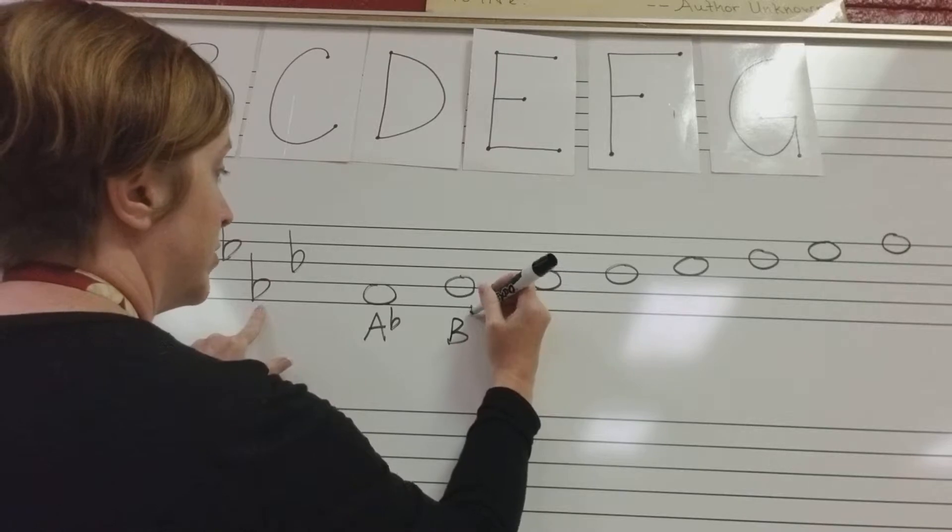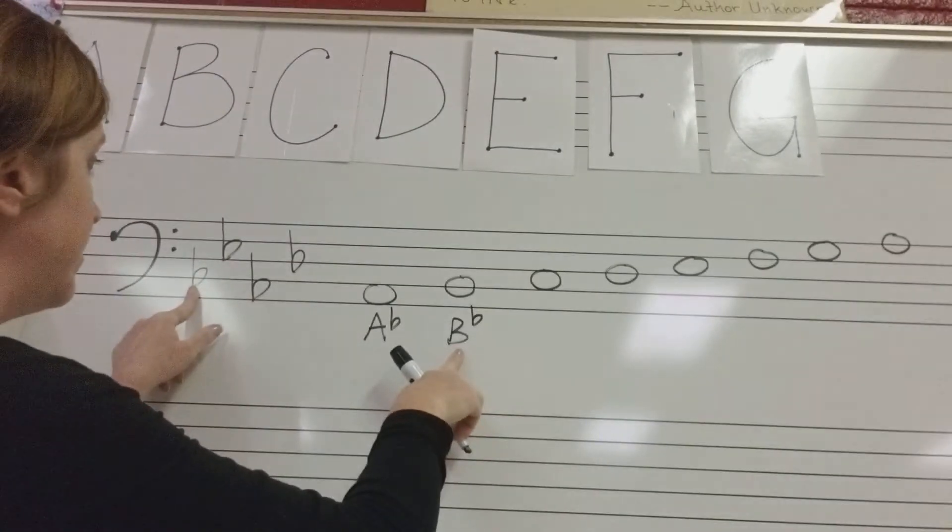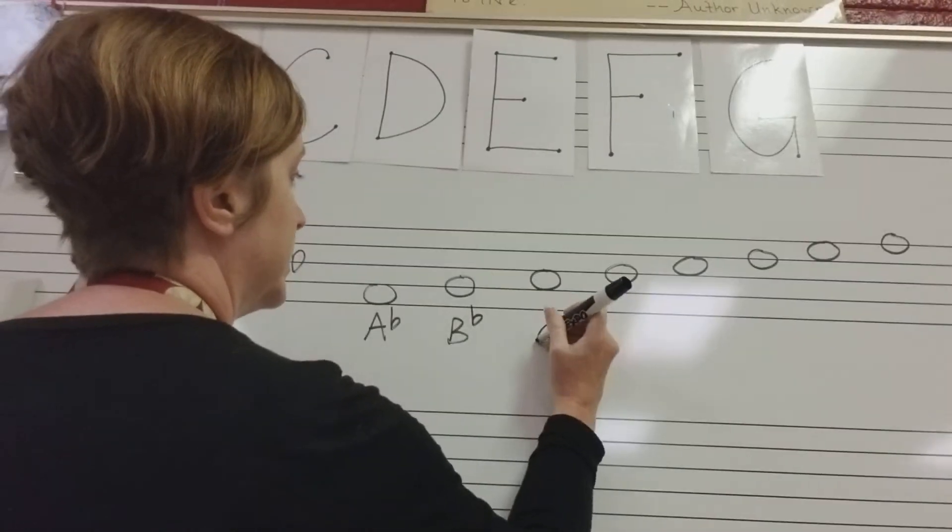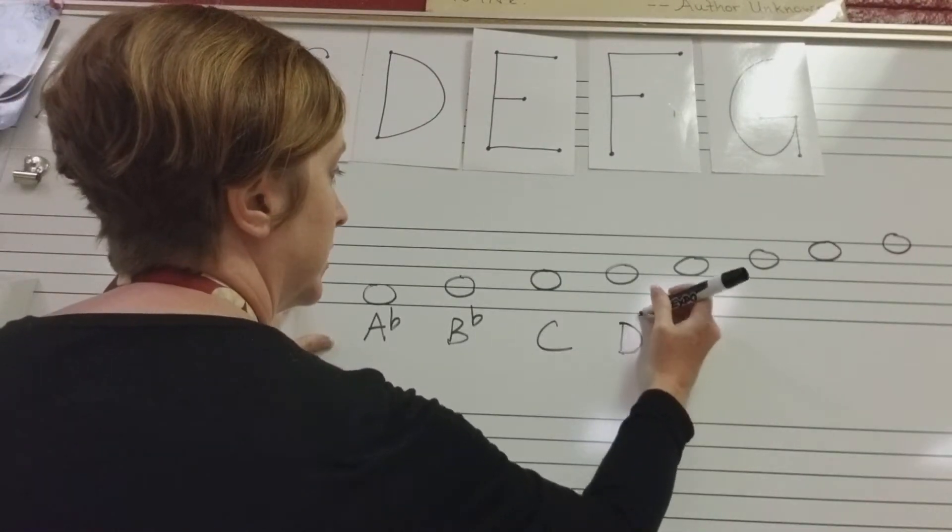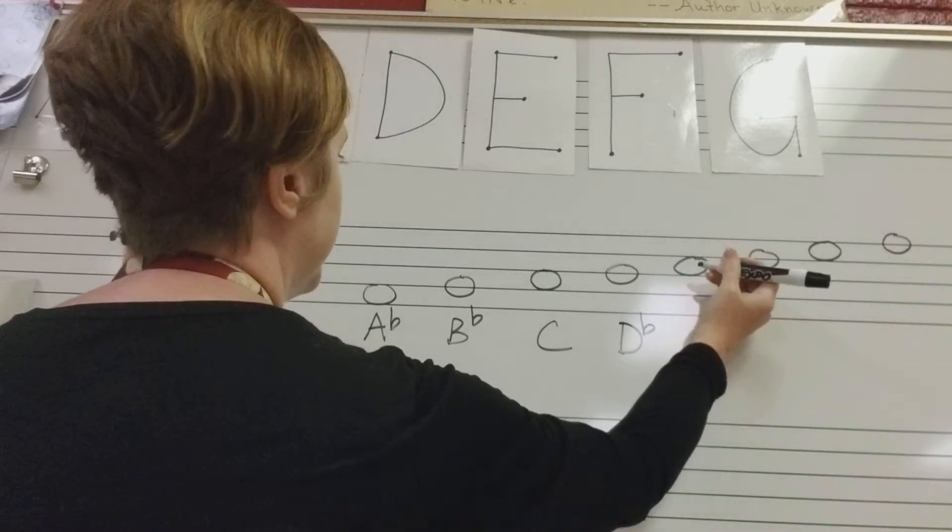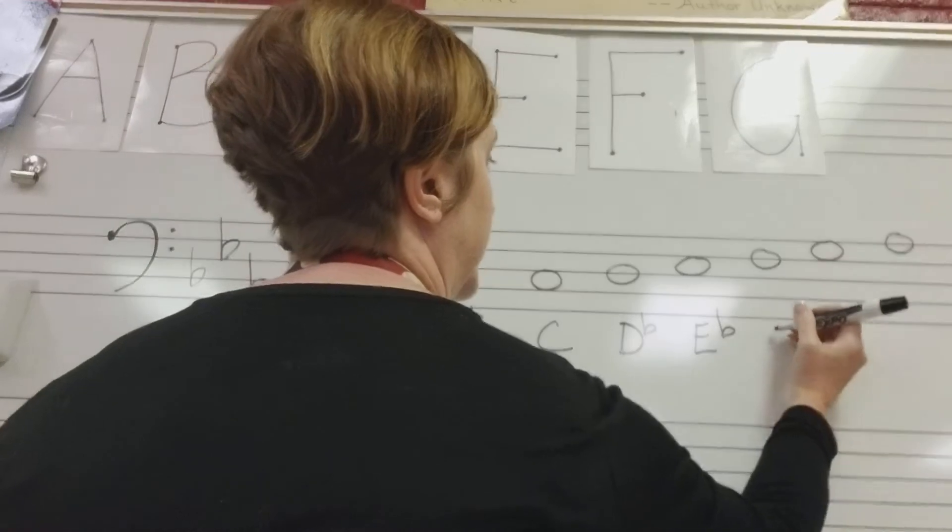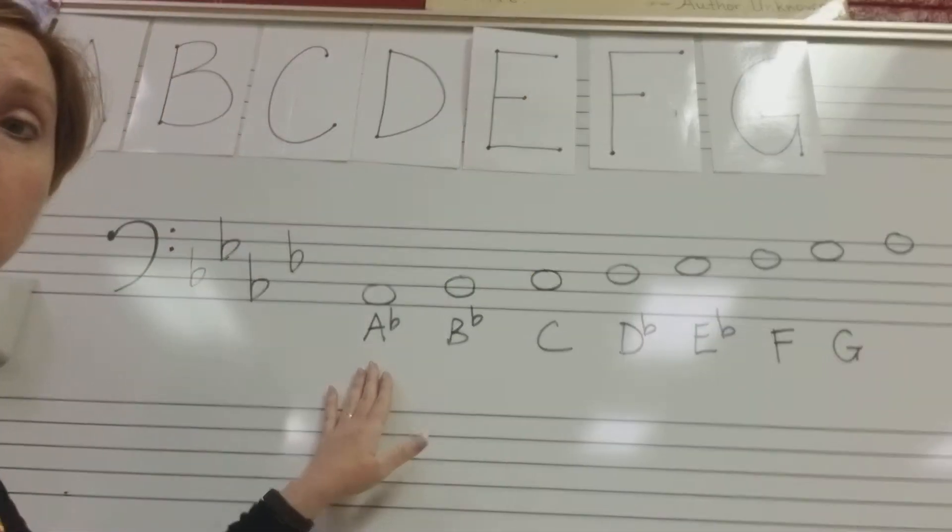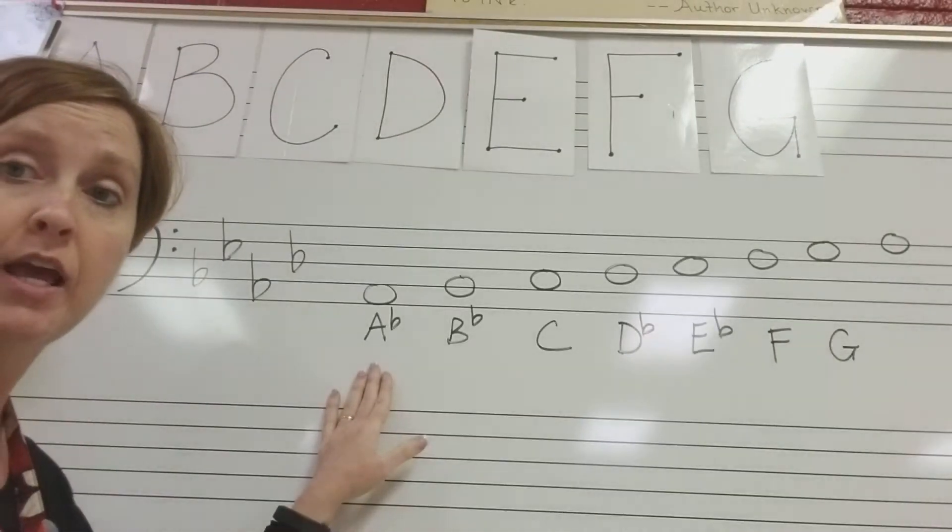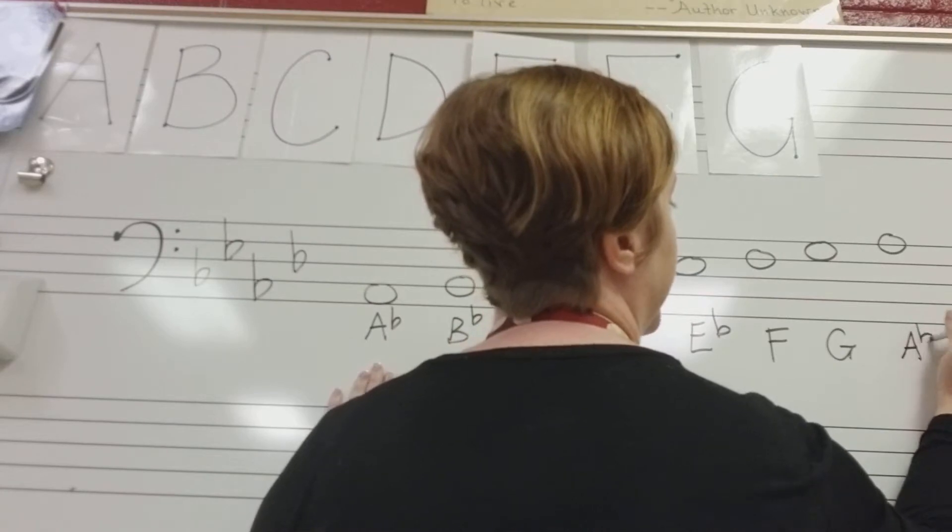B is next. Remember if you're doing a scale, it's really just the alphabet. So now we've got B-flat, and we've got a C. Next we have D-flat, then we have E-flat, then we have F, G, and whatever you start with for a scale, you should end with the same thing if you write the full scale. So we'll end with A-flat.